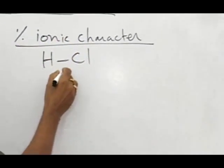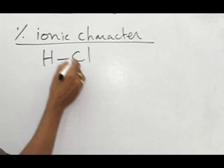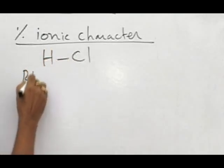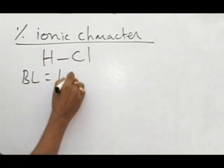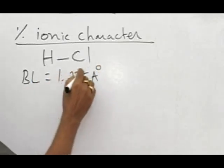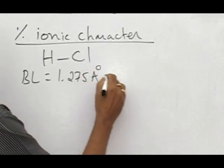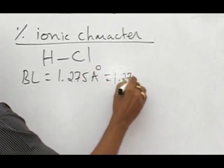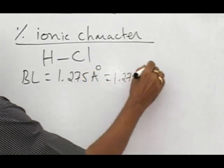It is a polar covalent molecule. As per the problem, the bond length is given. Bond length is equal to 1.275 angstrom unit. This should be converted into SI unit, that is 1.275 × 10^-10 meter.